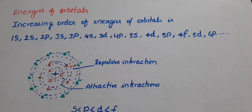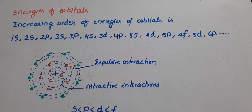Same energy orbitals are called degenerate orbitals. But differences in orbitals mean differences in energies. The main issue is repulsive interactions and attractive interactions, and electron stability is defined by these.